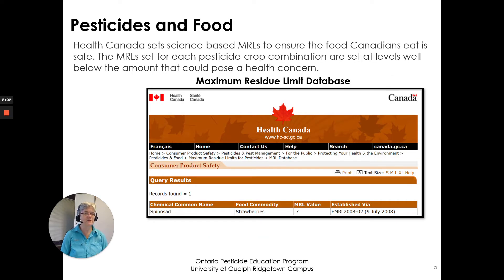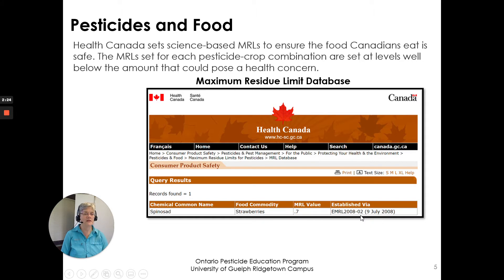Here is the maximum residue limit database from Health Canada. You can go on and search and look at the database. The chemical common name is here, the food commodity — strawberries — the maximum residue limit value stated here, and what date it was established. This was established on July the 9th of 2008.